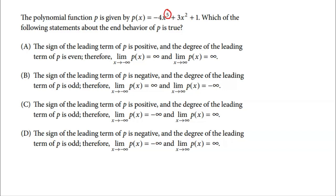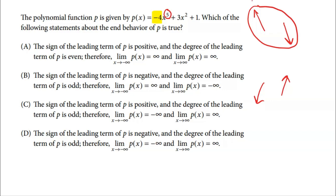An odd degree means one side is going up and one side is going down towards infinity. The left side could be going up while the right side goes down, or vice versa. Which one it is depends on the sign of the leading coefficient. The leading coefficient here is negative 4 — obviously negative — which means the left side is going up and the right side is going down. We notate end behavior using limit notation: the limit as x goes toward negative infinity is the left side, and positive infinity is the right side.